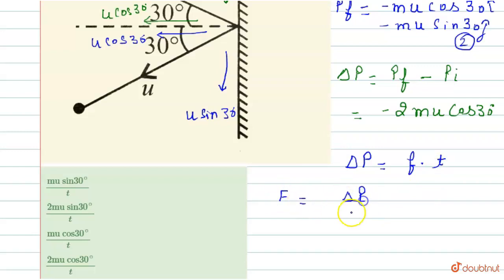del P divided by t. Now we can substitute the value. Del P is equals to minus 2 m u cos 30 degree divided by t. And this is the value of impulse.